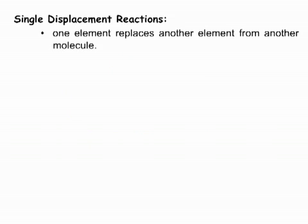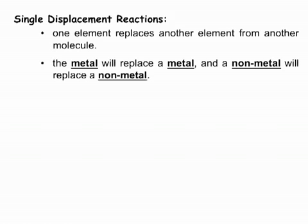In a single displacement reaction, one element replaces another element from another molecule. When you see it, you'll hopefully understand it. What we're doing here is one metal is going to replace another metal — that's the single movement — or a non-metal will be replacing another non-metal.